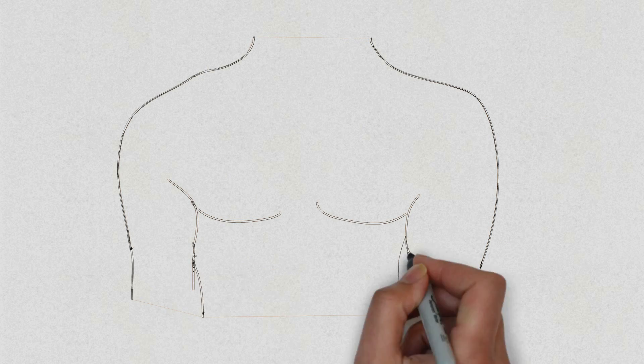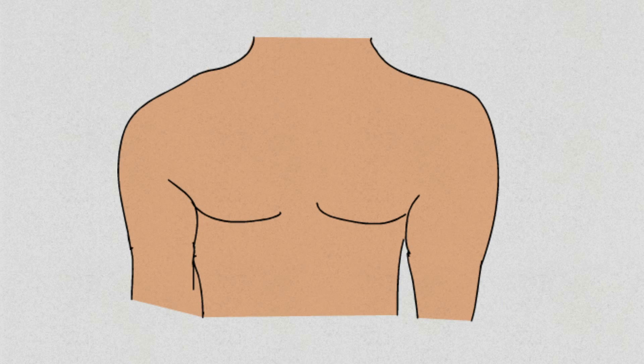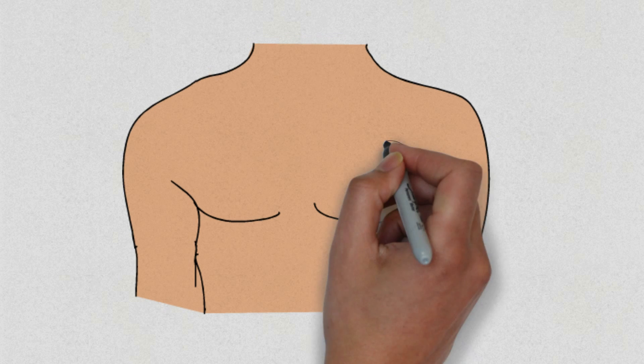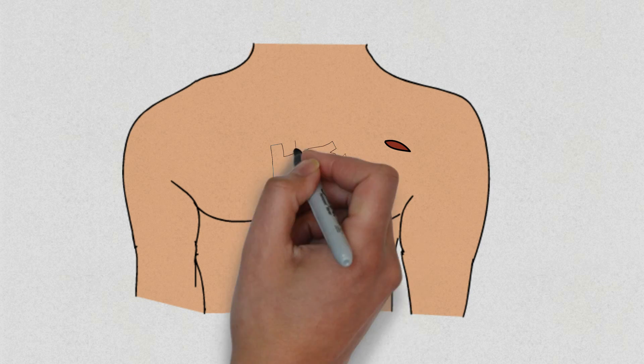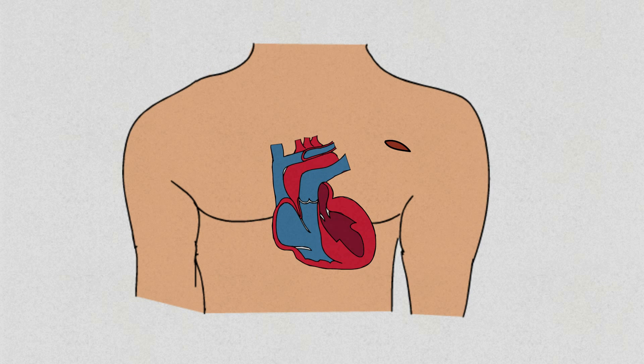During the procedure, you will be lightly sedated but awake. The ICD is usually placed in the upper part of your chest. A local anesthetic will be given to numb the area. A small cut will then be made, and a pocket formed under the skin. The wires will be passed through the blood vessels into your heart, under x-ray guidance.